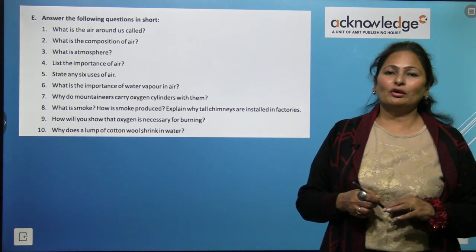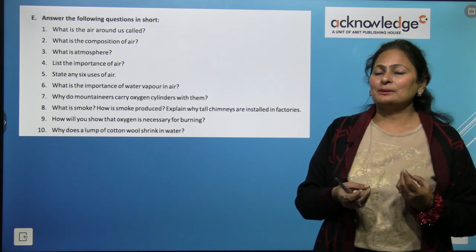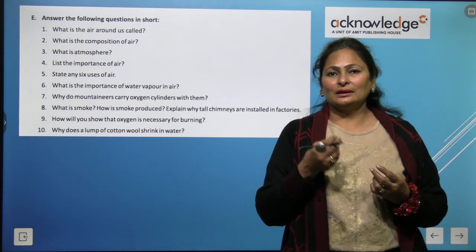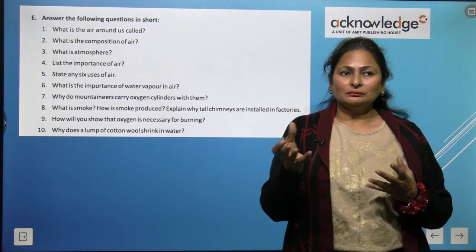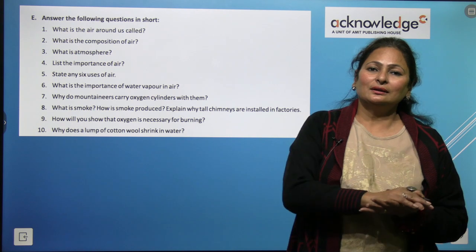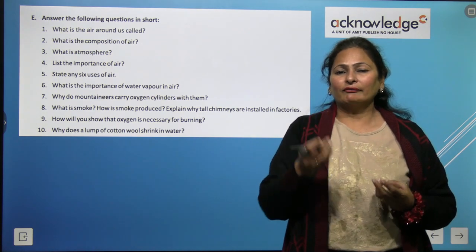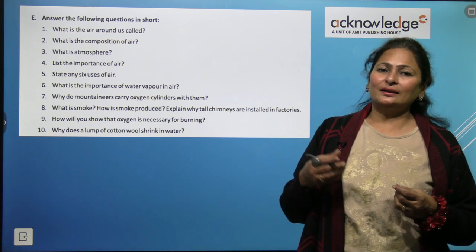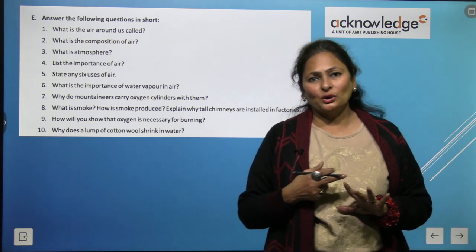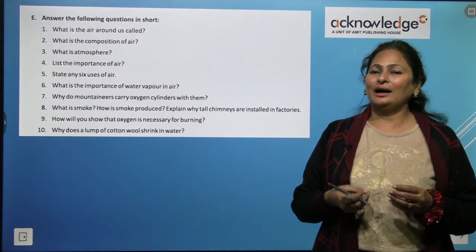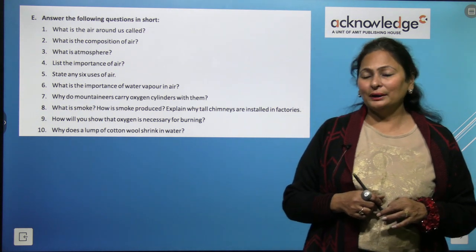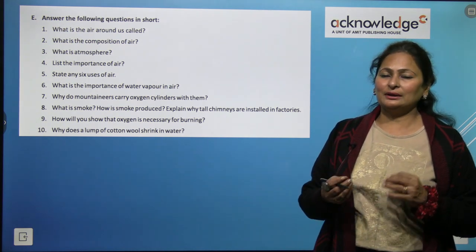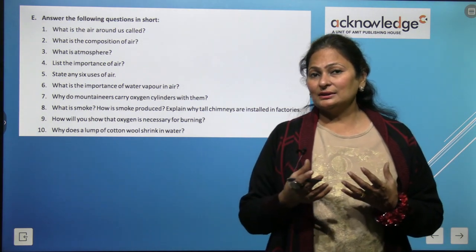How will you show that oxygen is necessary for burning? Light a candle, then cover it with a tumbler — after some time the candle stops burning because the oxygen inside the tumbler gets exhausted. Why does a lump of cotton wool shrink in water? Because the air present in the spaces of cotton wool escapes when placed in water, causing it to shrink.